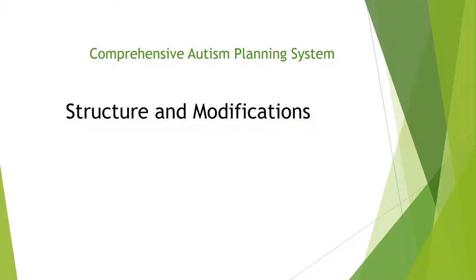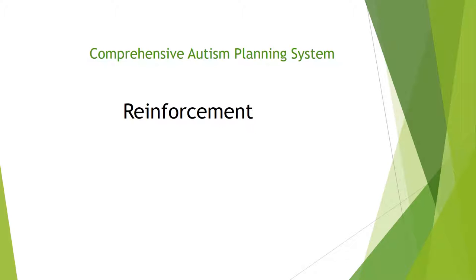Structures and modifications: this can encompass a wide variety of supports, including placement in the classroom, visual supports such as choice boards and visual schedules, peer supports such as circle of friends and peer buddies, and instructional strategies such as priming, self-monitoring, and reinforcement.